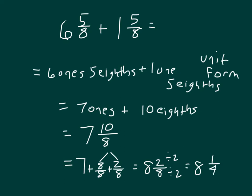Looking at our numbers again: fractional parts first — five eighths plus five eighths is ten eighths. Six and one is seven, and seven and ten eighths equals eight and two eighths, which equals eight and one fourth.